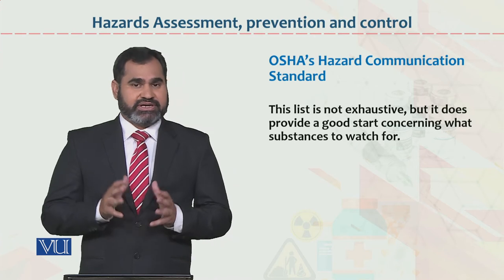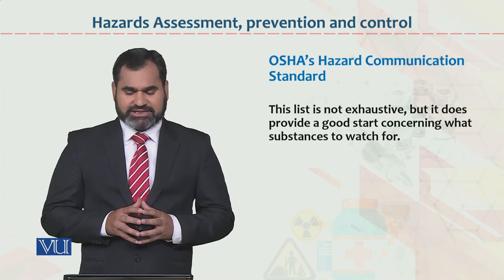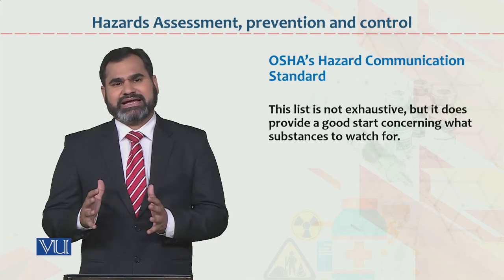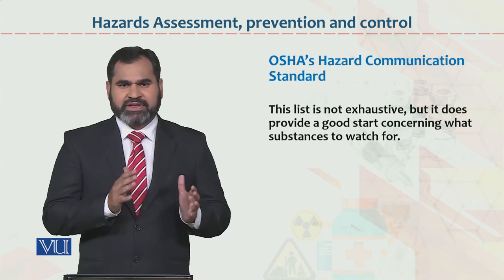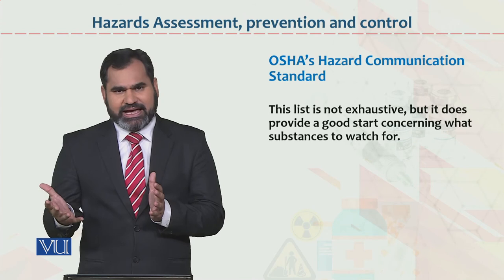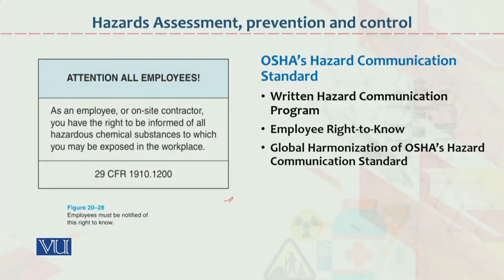This list is not exhaustive, but it does provide a good start concerning what substances to watch out for. This means that you have to see which toxic and hazardous materials can be managed by an organization. Occupational Safety and Health Association communication standards — these three things are important.